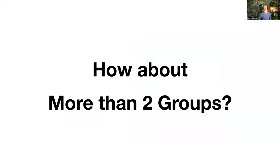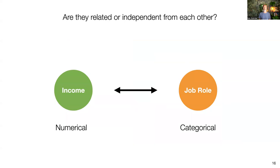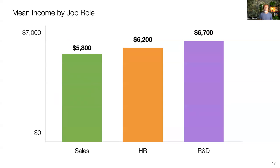How about more than two groups? The Kruskal-Wallis test can handle that too — it doesn't have to be only two groups. Let's say we have income and another categorical variable, job role. If you draw a bar chart showing mean income by job role — Sales, Human Resources, and R&D — the Kruskal-Wallis test can be used to see if this difference is significant or not.